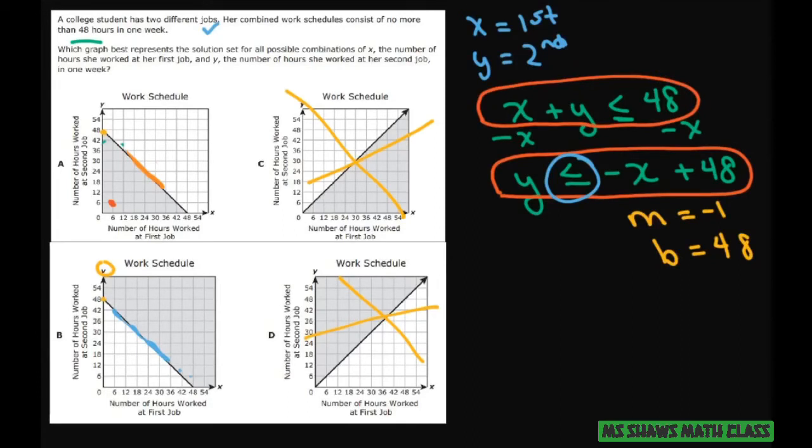So if we pick 6, 6, this point here is called 6, 6. Then you would have 6 plus 6 is less than or equal to 48. And that's true.